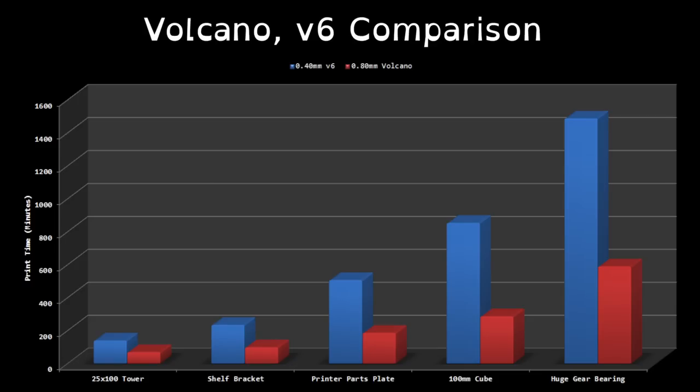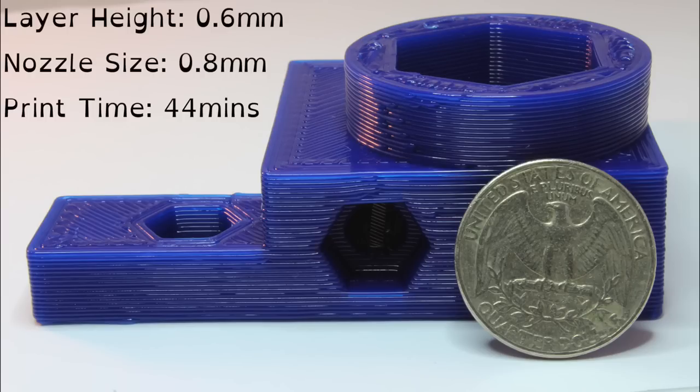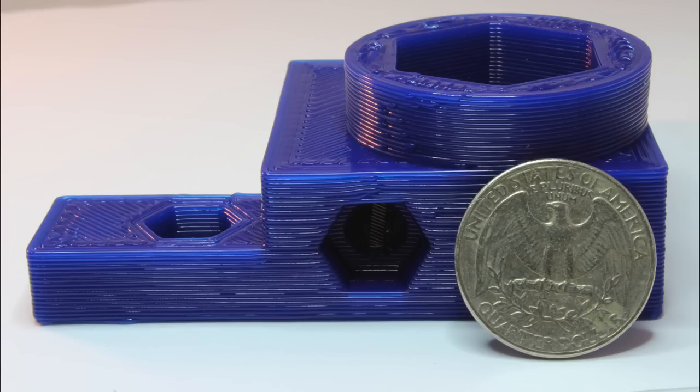We developed the Volcano to help us fit out our new workshop. We needed big parts, fast and lots of them. As you can see, Volcano could cut print times by more than a half. At these layer heights, the layers stop being imperfections and start to become features.